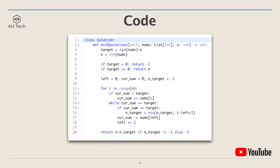Now let's look at the code. The first part sets up a target variable which is the summation of nums minus x, and n is the size of the nums array. We do some pruning: if target is smaller than zero, since every element is positive, it's not possible to fulfill the requirement, so we return negative one. If target is equal to zero, the summation of nums is exactly x, so we return n.